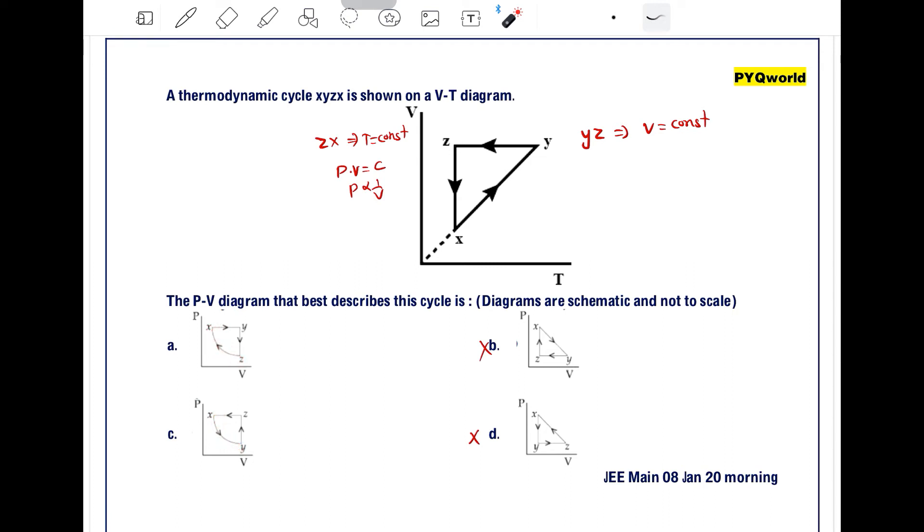For x-z process, it is isothermal. And in x-z here, pressure is constant. So option C can't be the correct one. So the remaining one is option A.